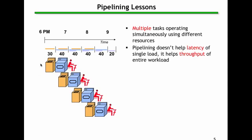You'll note that pipelining doesn't improve the latency of doing any load of laundry, that each load of laundry is still taking at least 90 minutes. The key benefit of pipelining is that it helps throughput, that we're able to do a number of loads of laundry in less time than it would take if we had done them sequentially.